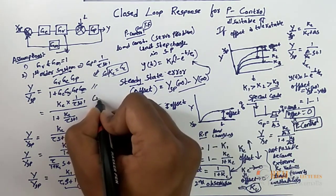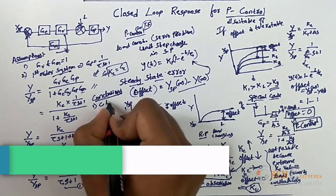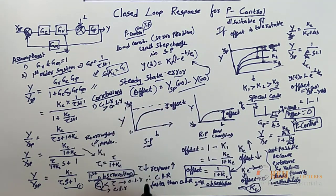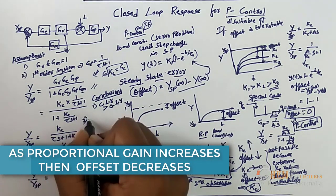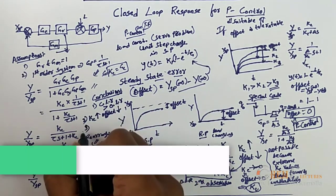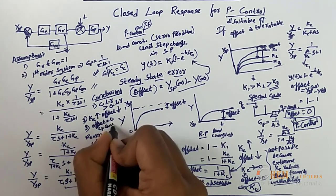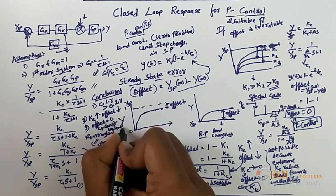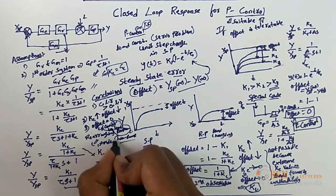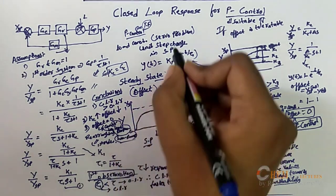Now the conclusions from this complete derivation: first, the closed loop response is faster than open loop response. Second, as Kc increases, offset decreases. Third, offset equals 0 for a constant liquid level problem having a pump — this is a special case for the servo problem.